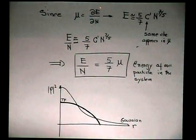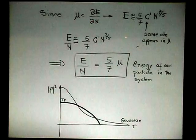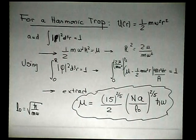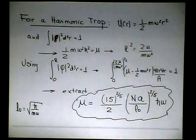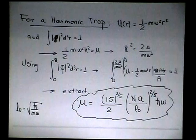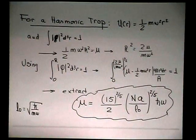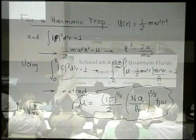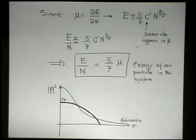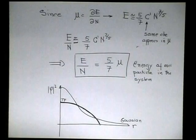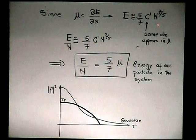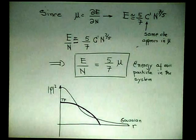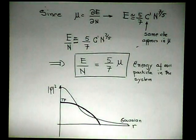Now, since mu is defined as the variation of the energy with the number, and I have mu there. See, mu here goes with n to the two-fifths. Then I ask, what is the function which derivative gives you n to the two-fifths? You find very easy. It has to be n to the seven-fifths. Because when you take the derivative, it gives you two-fifths. And there is a constant here that's very easy to determine. So this is the energy of my system, which is completely different from the chemical potential.